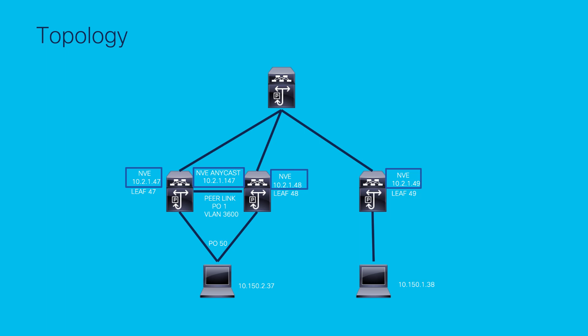There is one host connected to leaves 47 and 48 through the VPC port channel 50. This host has the IP address 10.150.2.37, and there is also another host connected to leaf 49, which has an IP address of 10.150.1.38. The backup VLAN configured on both Nexus switches in VPC is VLAN 3600, which is local to the devices on the default VRF and not stretched across the VXLAN fabric.